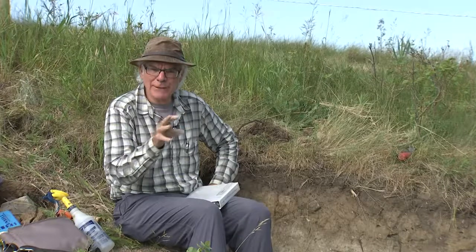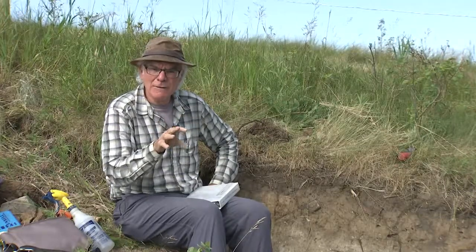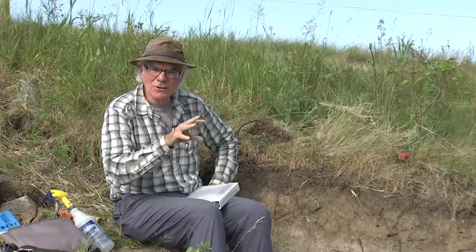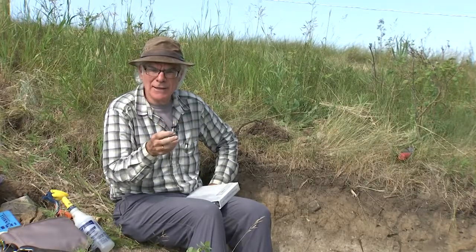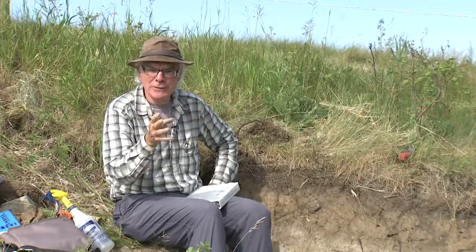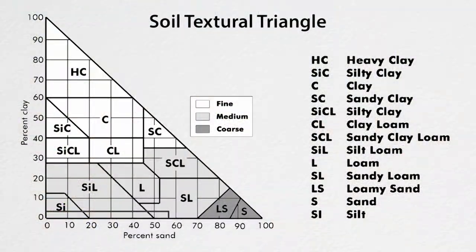The three materials feel very differently in their pure form, but in soils what we get are combinations of sand, silt, and clay. A combination of 33% of each we would call a loam. When we're in the field we use what's called a textural triangle, which has 13 different textural classes in it, and we use our hands to place the soil sample into one of those 13 classes.